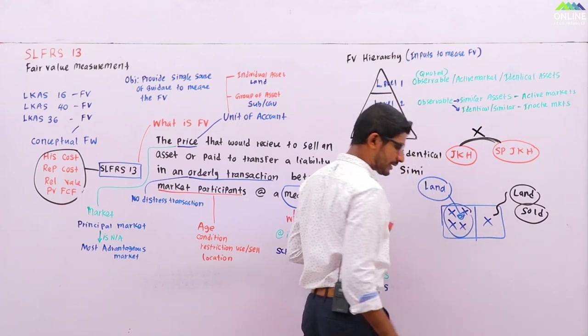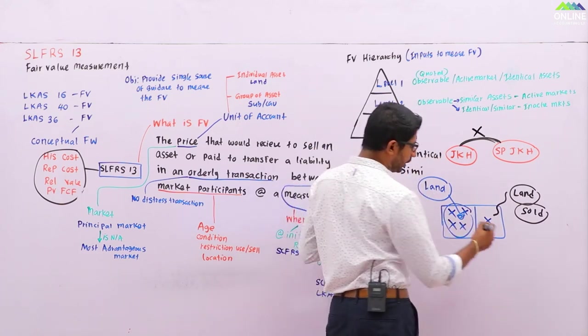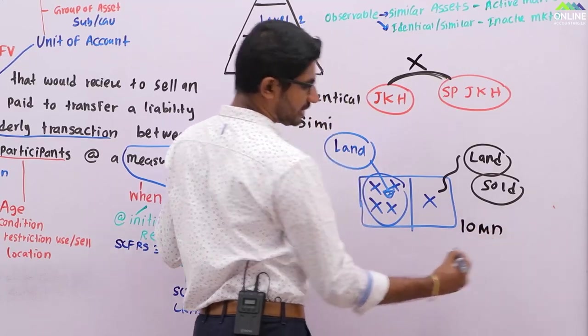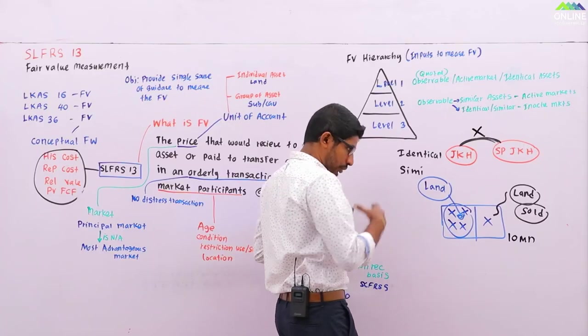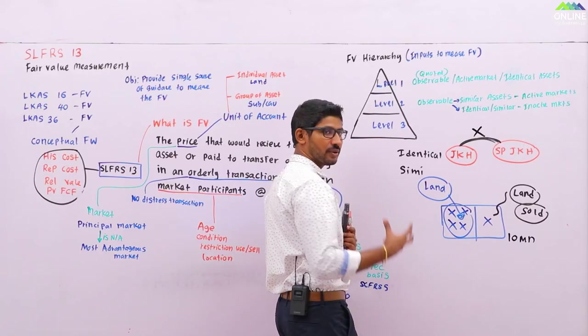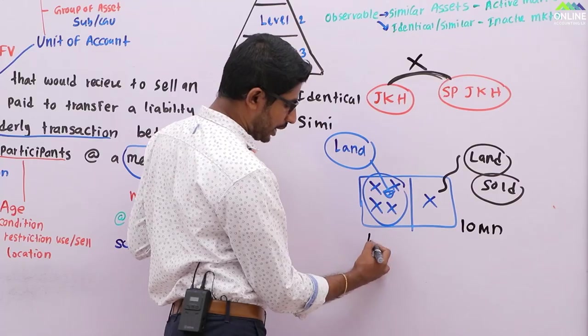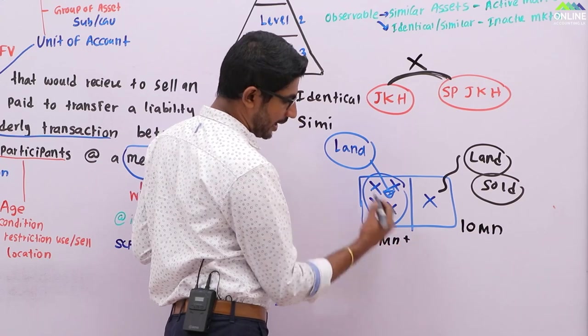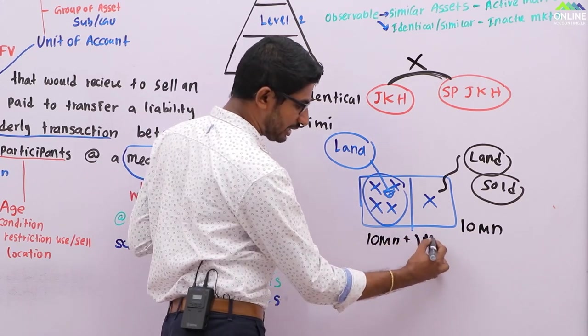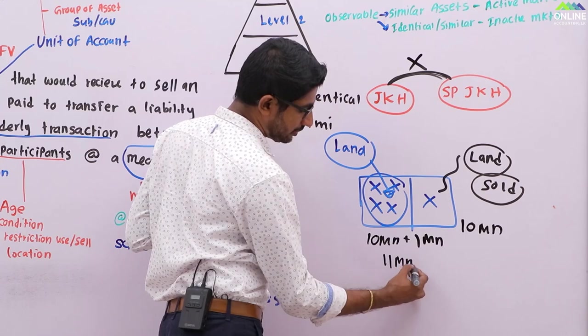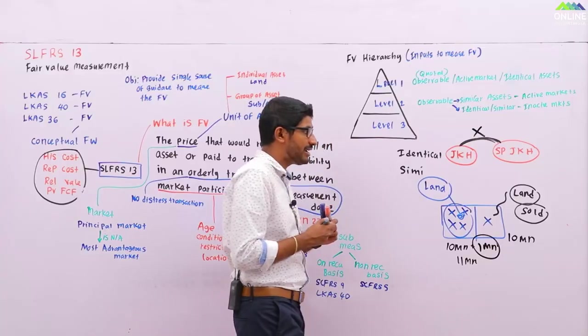The other land doesn't have any trees and they sold it for 10 million. Without any trees they sold it for 10 million. Your land is having 10 trees - 5 jack trees and 5 teak trees. Can you say my land is also 10 million? No, you have to say 10 million plus the value for the trees, 1 million, and your price should be 11 million. So you need some kind of difference.